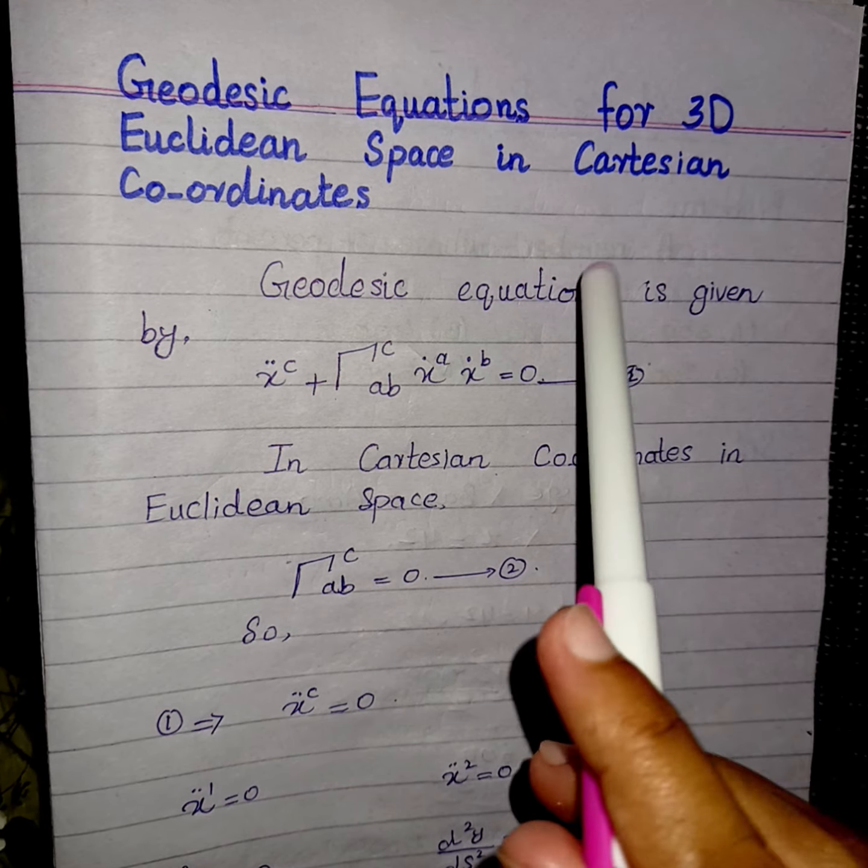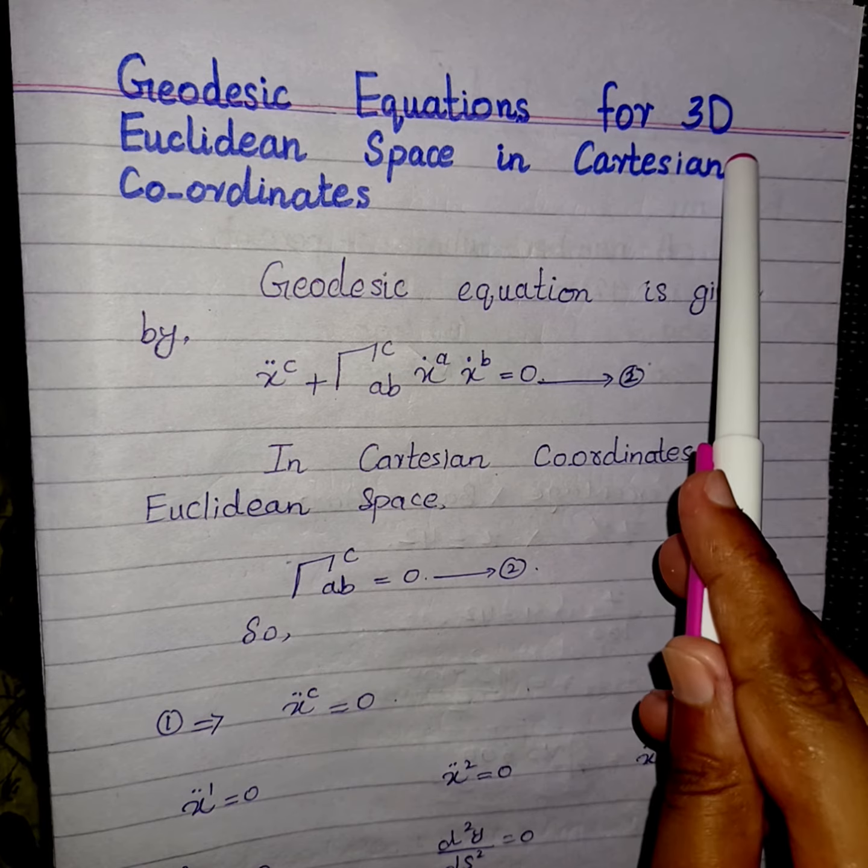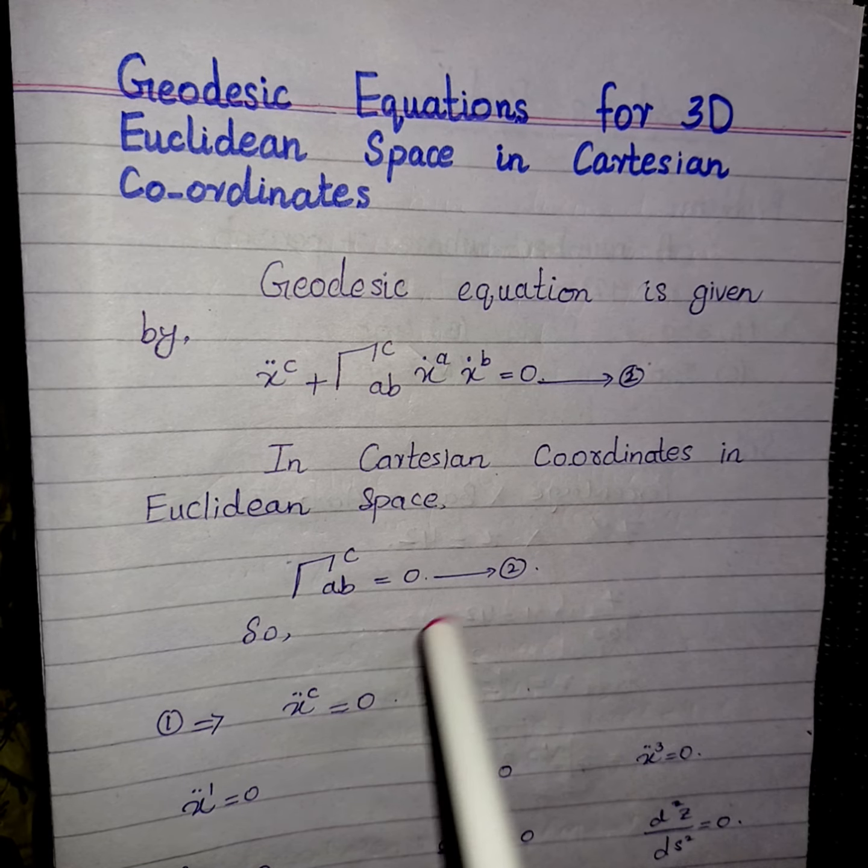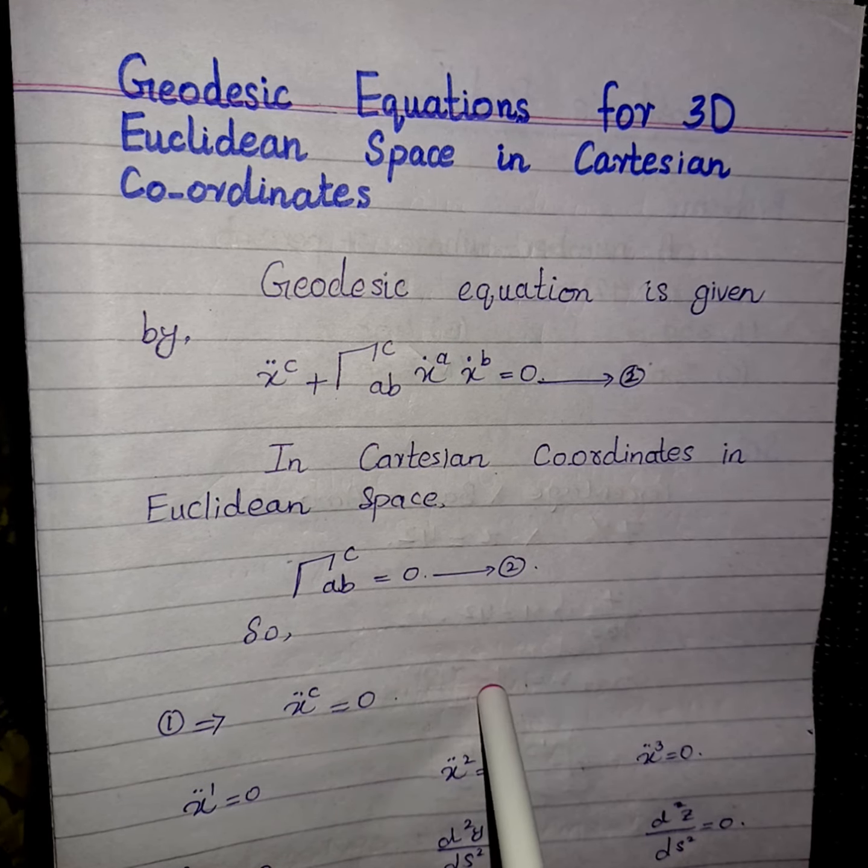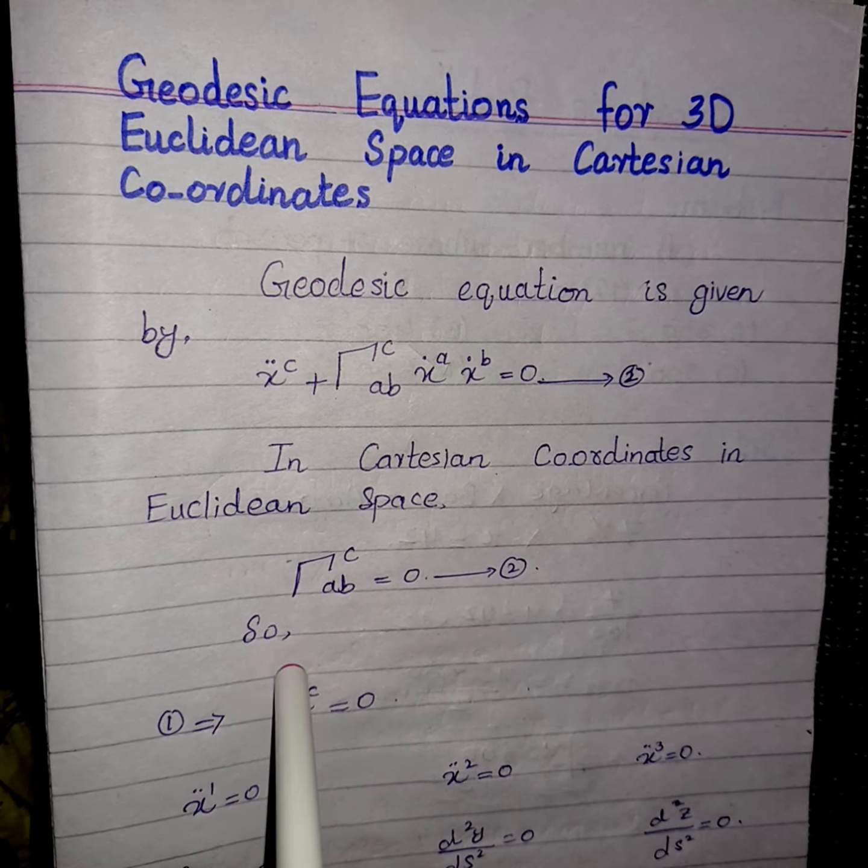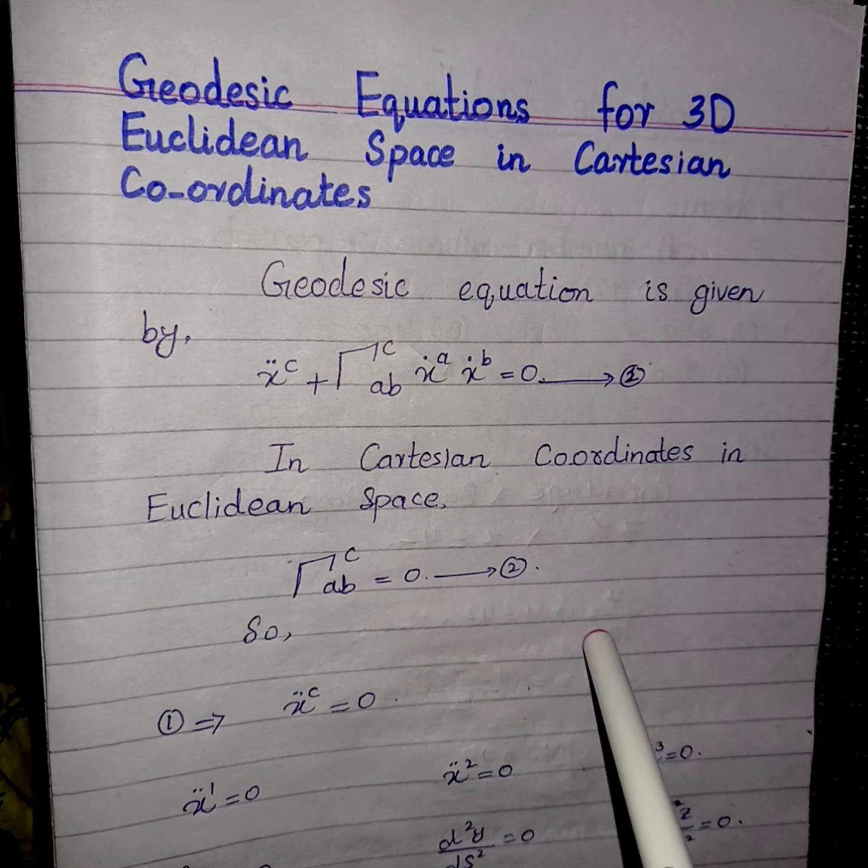Now, we are talking about three-dimensional space. That means c is a free index, so the variation of c will be one, two, and three. In three dimensions, we have three coordinates: x, y, and z.